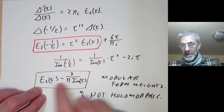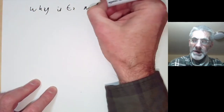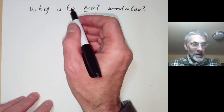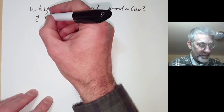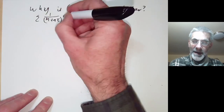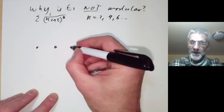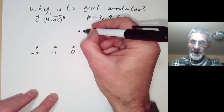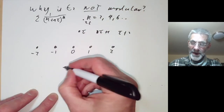Now we should explain why E2(τ) is not quite a modular form. If we look at the proof that E4, E6, and so on are modular, we look at the sum of 1 over (m + nτ) to the k, where k equals 2, 4, 6, and so on — summing over all the lattice points m + nτ.